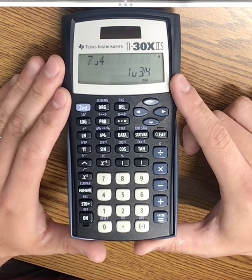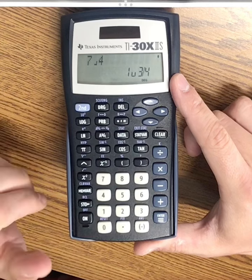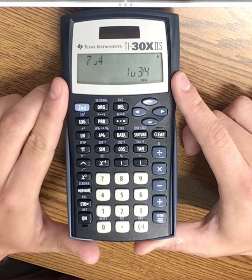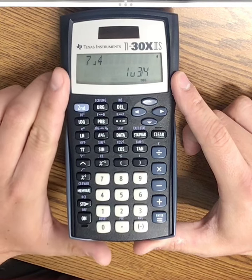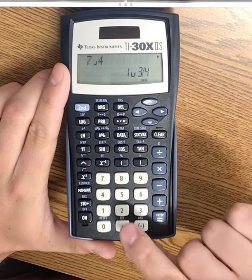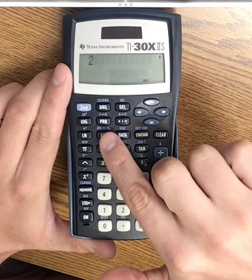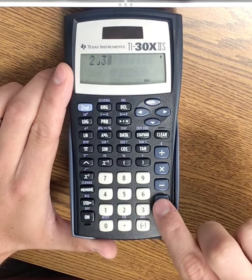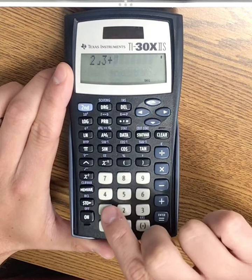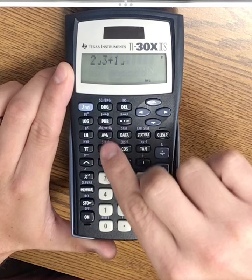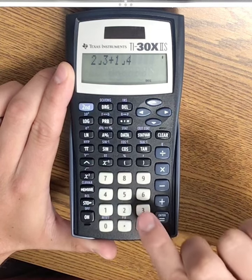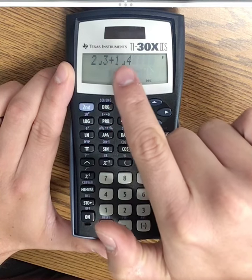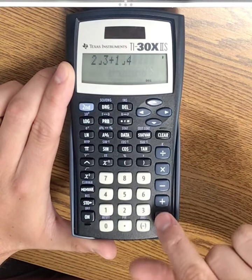I can also do operations with this function. Let's say I wanted to do two-thirds plus one-fourth. Again, I would type two-thirds as 2, fraction button, 3, plus 1, fraction button, 4. So this is two-thirds plus one-fourth. If I come down here and press enter, I get 11-twelfths.